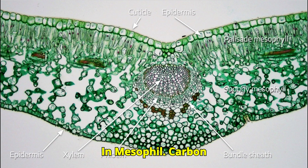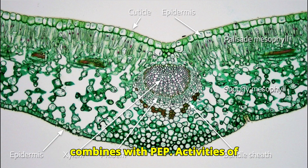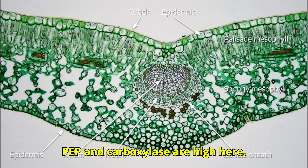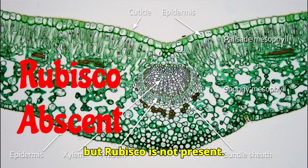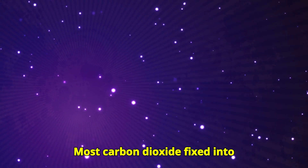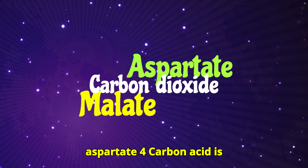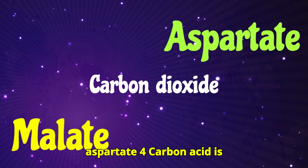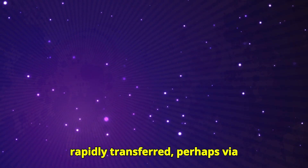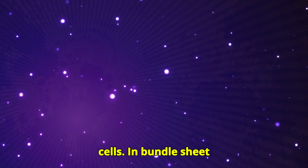In mesophyll cells, carbon dioxide first penetrates the mesophyll and combines with PEP. Activities of PEP carboxylase are high here, but RuBisCO is not present. Most carbon dioxide is fixed into carboxyl groups as malate and aspartate. These four-carbon acids are then rapidly transferred, perhaps via plasmodesmata, into bundle sheath cells.